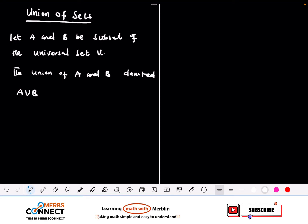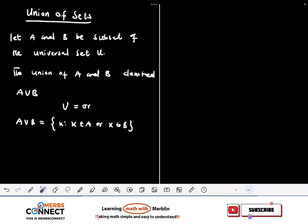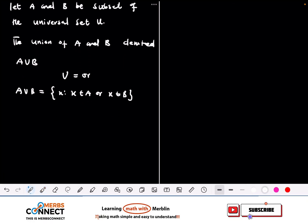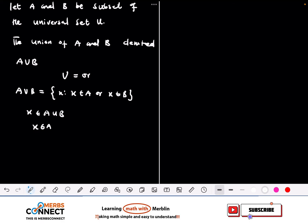In this video, when we see union we are going to say union is the same as 'or'. So we can define A union B to be equal to the set of x such that x belongs to A or x belongs to B. We are using 'or' for the union.